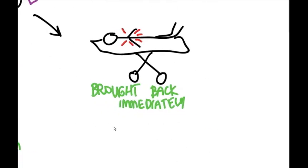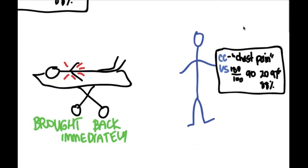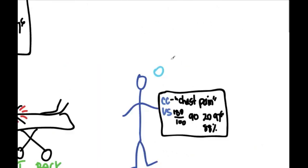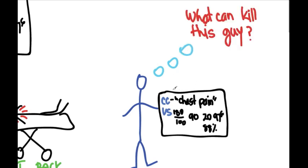You happen to be working in the emergency room that day, and pick up my chart. Looking at the chief complaint and vital signs, you ask yourself, well, what can kill this guy with this chief complaint and these vital signs? And so you immediately form your killer differential.